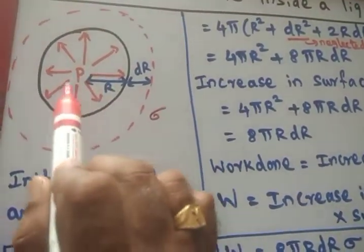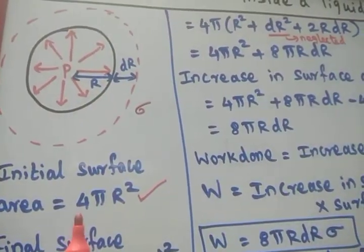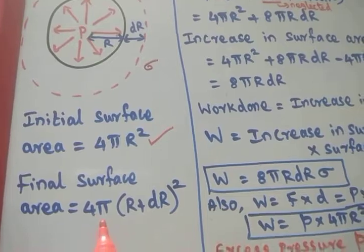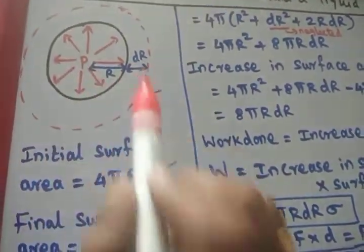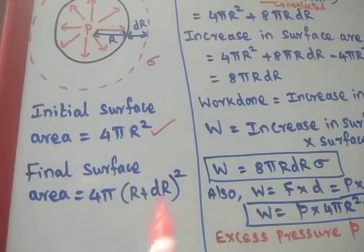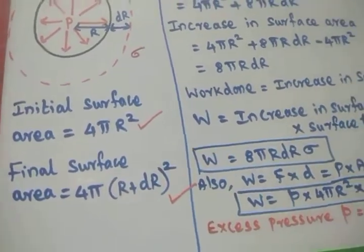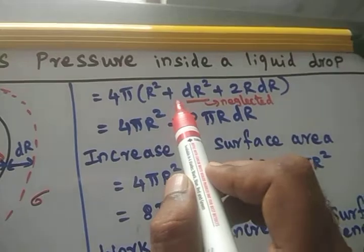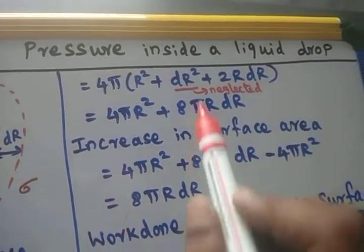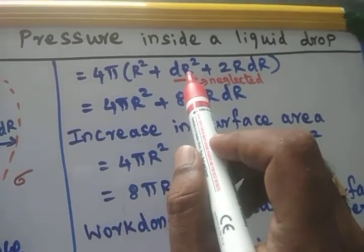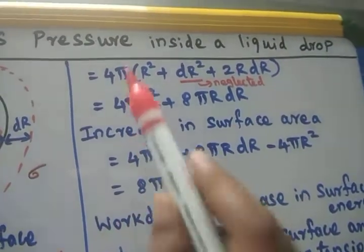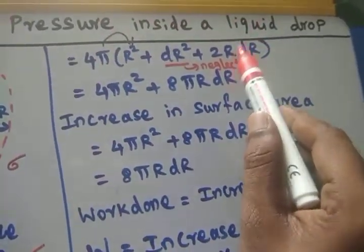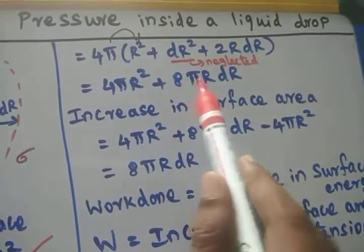Then due to this excess pressure, the increase in radius is dr. The final surface area of the liquid drop is 4 pi times (R + dr) squared. Expanding using (a + b) squared gives 4 pi into (R squared + 2R·dr + dr squared). Since dr is a very very small value, we can neglect the dr squared term, giving 4 pi R squared plus 8 pi R dr.